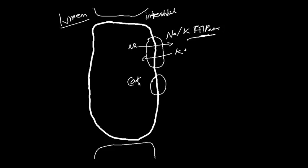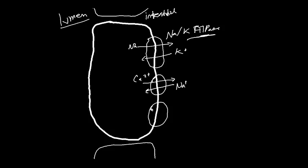We've also got another channel here for calcium (Ca²⁺) that pumps calcium out of the cell into the interstitial space, allowing calcium to be reabsorbed. We use the sodium gradient — created by actively pumping sodium out using ATP — to drive calcium from inside the cell into the body. There's also a calcium-hydrogen antiporter that exchanges calcium for a hydrogen ion, also requiring ATP.